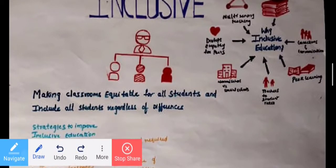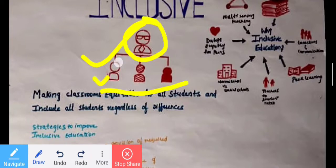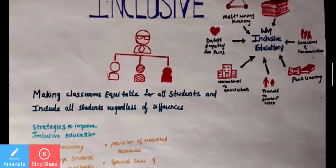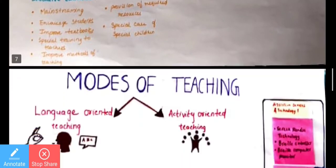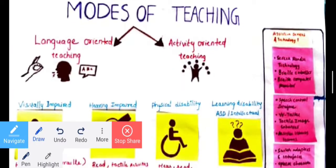In an inclusive classroom, beneath the same school roof — normal children, hard disabled, fully disabled — it is all the same. There are different streams: mainstream education, special education, inclusive education, and general education. Modes of teaching here are normally two types based on the type of disability: language-oriented teaching and activity-oriented teaching.